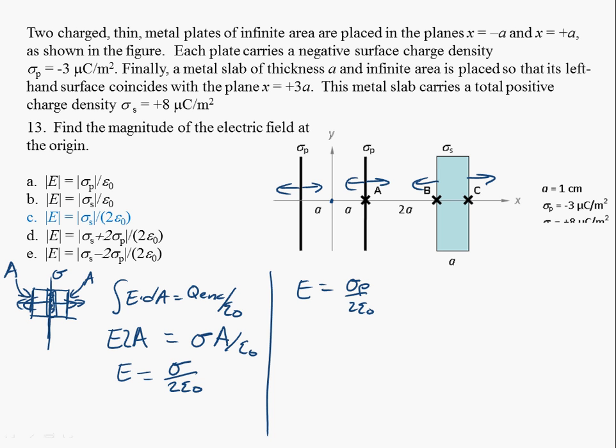This sigma P is pointing to the left, so I get a minus sigma P over 2 epsilon naught. And then this sigma S is also pointing to the left, so I get a minus sigma S over 2 epsilon naught. Notice these two cancel each other out. And I just get sigma S over 2 epsilon naught. And they're only asking for the magnitude, so I don't even have to worry about the sign in this case.